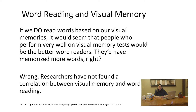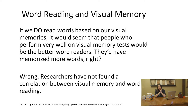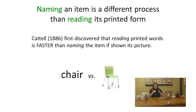Experiments have also found that when we test people with superior visual memory, they don't test as better readers — there is no correlation between the two. That's because different parts of the brain are responsible for visual memory versus reading words. This was first noticed by Cattell back in 1886, who discovered that people actually read printed words more quickly than they can look at a picture of an item and name it. People can read the word 'chair' faster than they can look at a chair and say 'chair.'